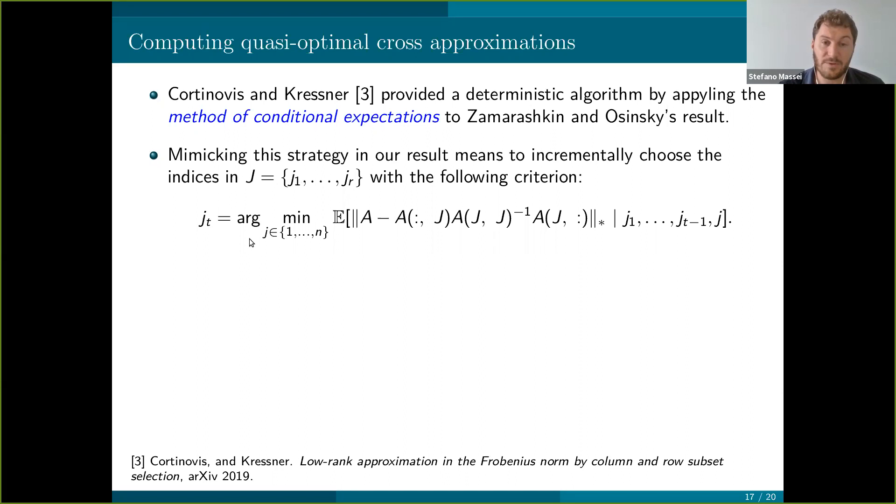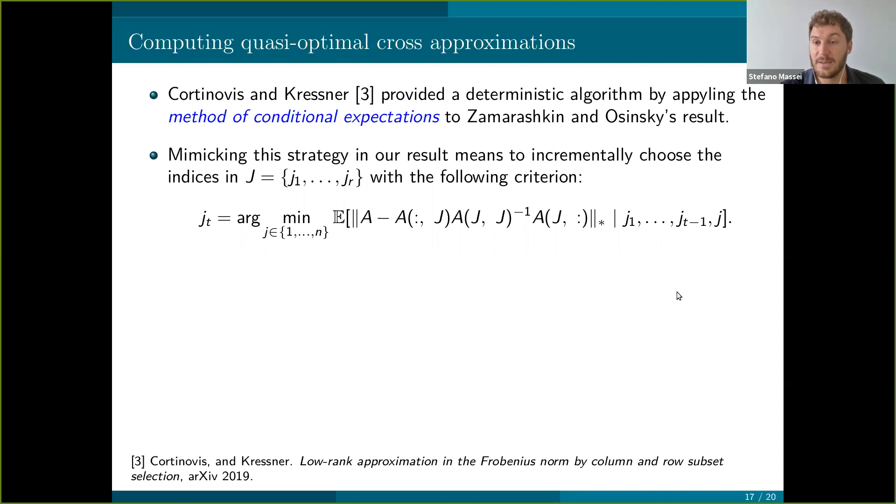This translates into an algorithm that selects the index set J with an augmenting procedure where every time you add to a partial version of J a new index that verifies this minimum problem. You add the index that minimizes the conditional expectation of the approximation error, where you condition on the fact that you already chosen the first elements of J. This seems a bit cryptical, but if you develop some computation, then you can simplify this criterion as choosing the index JT which minimizes a certain ratio of two coefficients in the characteristic polynomials of the associated residual metrics.